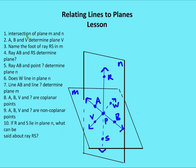Let's go through some practice questions on lines and planes using two planes N and M. First, the intersection of plane M and N is ray AB. Second, AB and V determine plane M, because those are three non-collinear points that determine plane M.